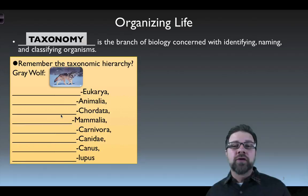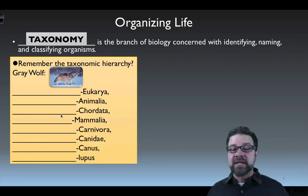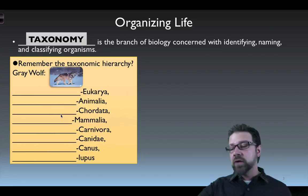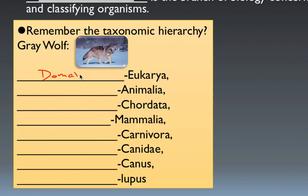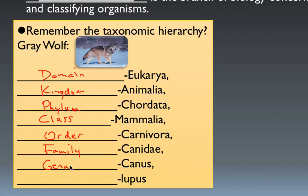In an earlier lecture we talked about a taxonomic hierarchy, using the gray wolf as an example. This is the list of terms we use to classify organisms into particular categories based on their characteristics. We have very general terms at the top and very detailed terms at the bottom. At the top we had domain, the largest all-inclusive category, then kingdom, phylum, class, order, family, genus, and species.